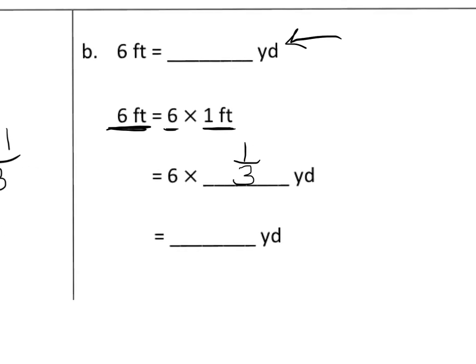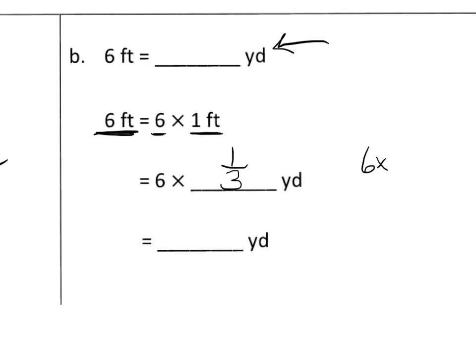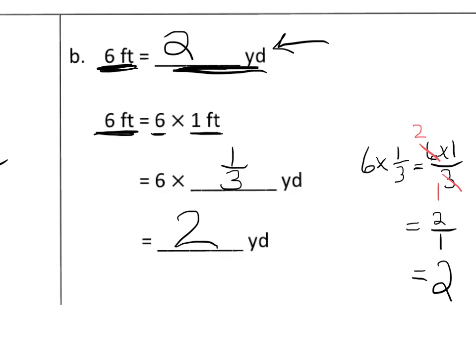Because three feet is equal to a yard, so one foot is one third, or one out of three. And now, six times one third, six times one third is six times one over three, and we know that both six and three are divisible by three. So three divided by three is one, six divided by three is two, so two times one is two over one, which is two. So...